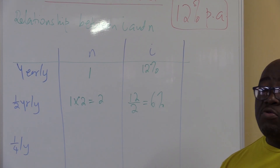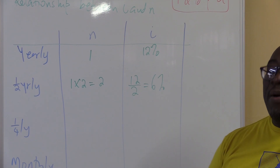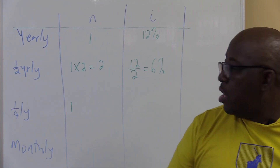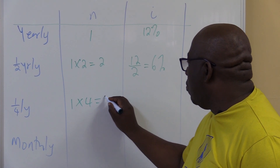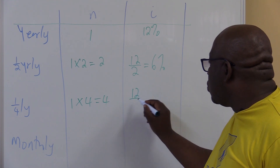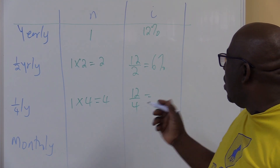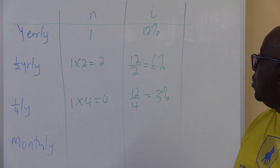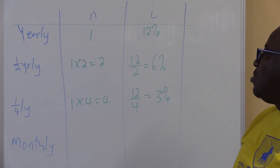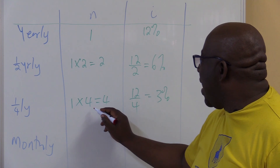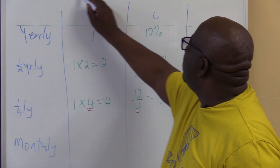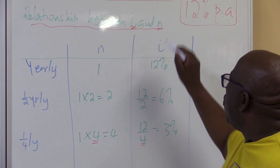Another example: compounding quarterly. How many quarters do we have in one year? We have four. So you multiply N by 4, giving N = 4. Remember it was 12% — there are four quarters in a year, so you divide i by 4 to get 3%. Every quarter the interest is 3%, 3%, 3%, 3%, until it reaches 12% per annum. When you multiply N by 4, you divide i by 4. There is a special relationship between i and N that you must understand.